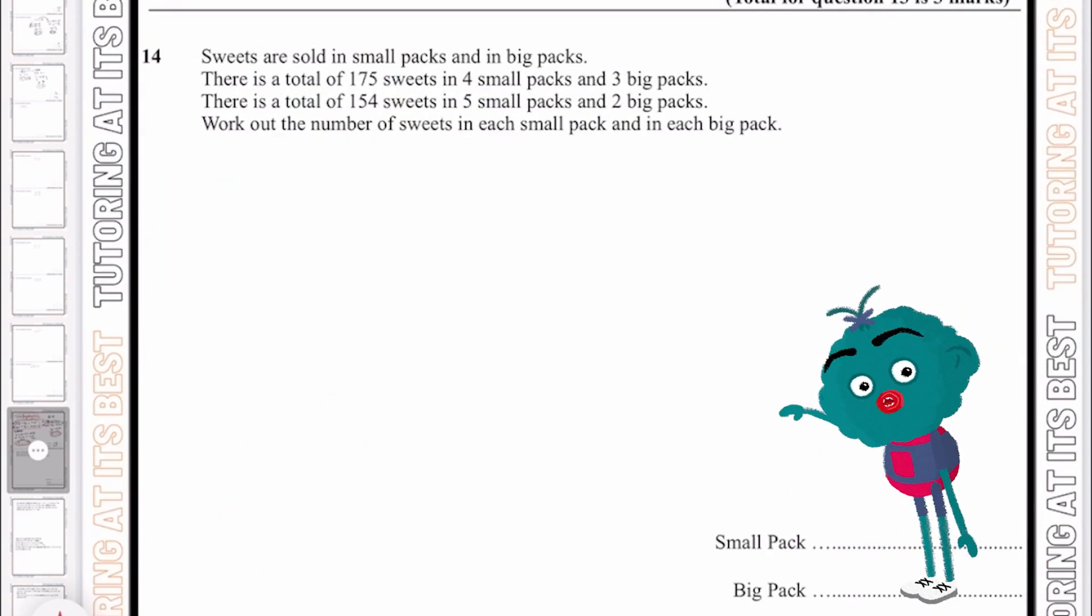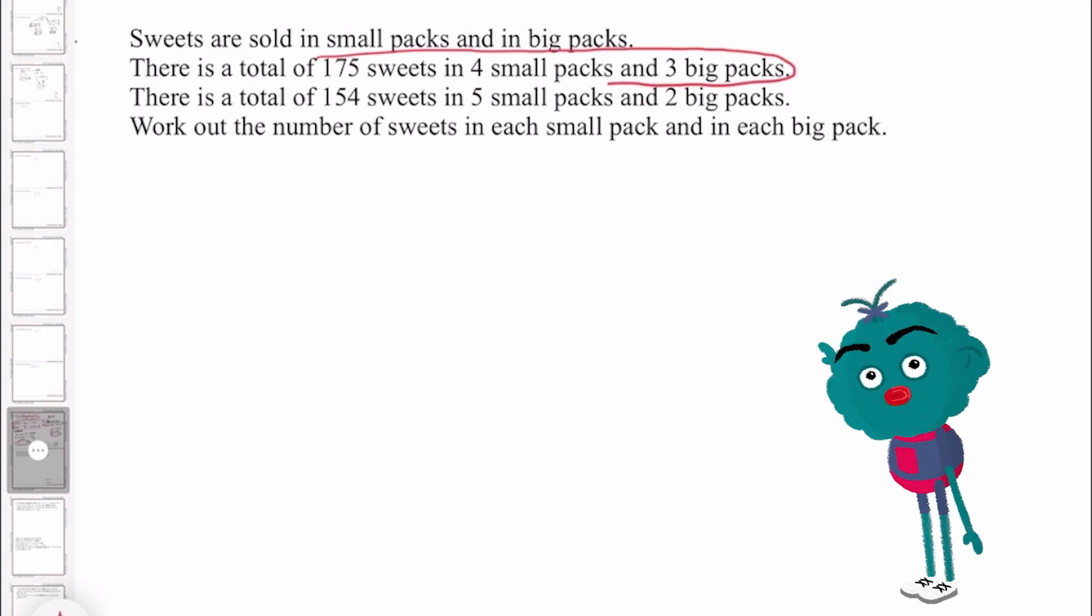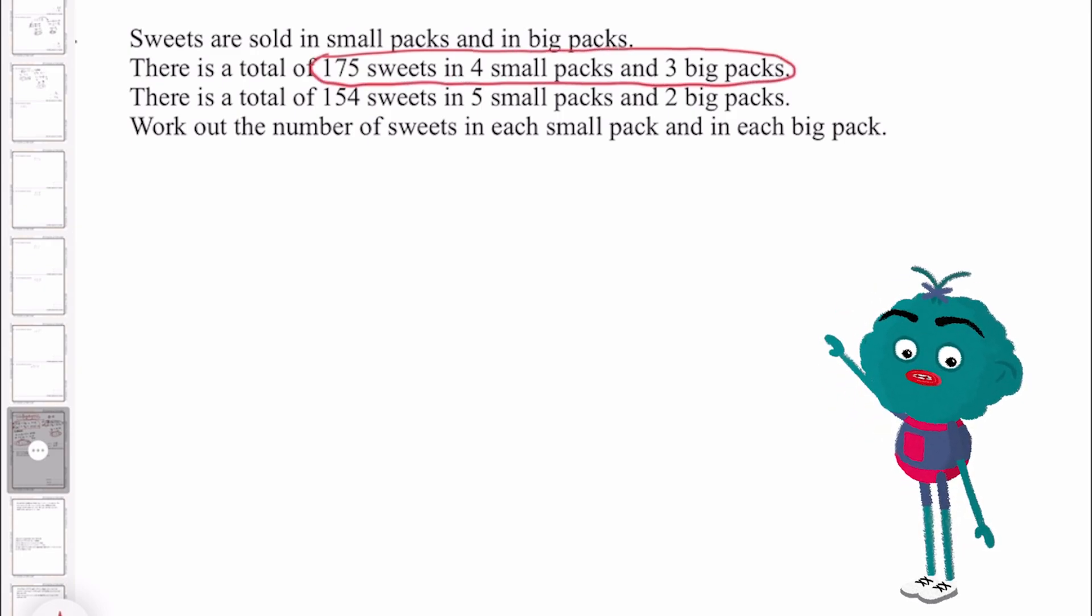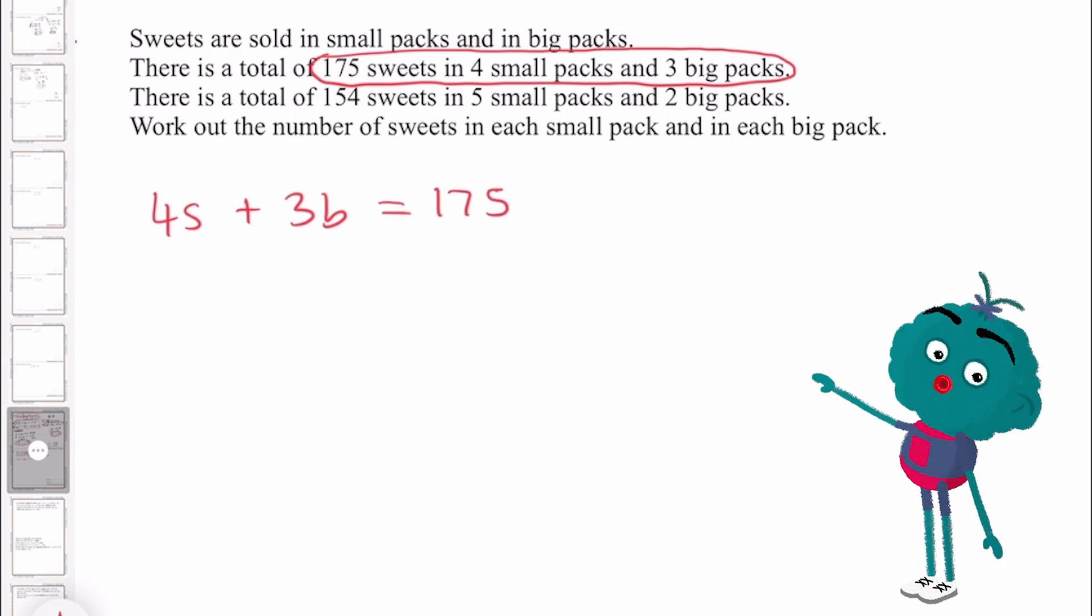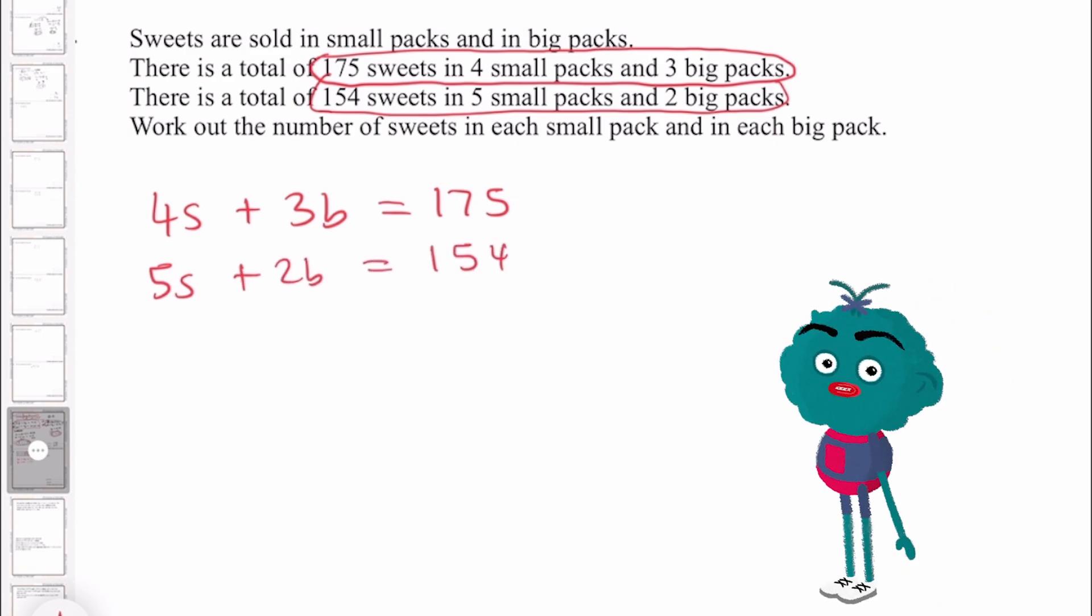So sweets are sold in small packs and in big packs. There is a total of 175 sweets in four small packs and three big packs. So let's write this out. 4s, which is small packets, plus 3b, which is three big packets, equal 175. And I'll do the same thing for the second sentence. That's five small packets plus two big packets equal 154.